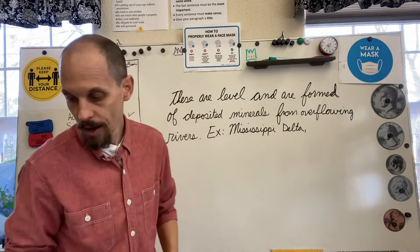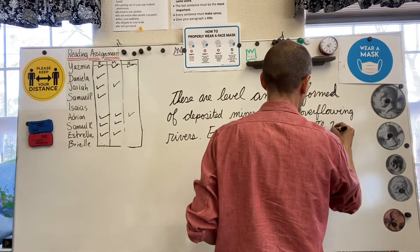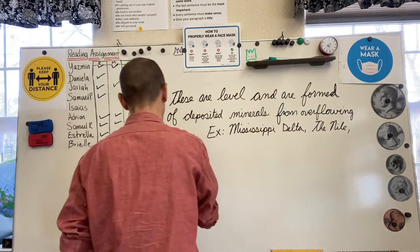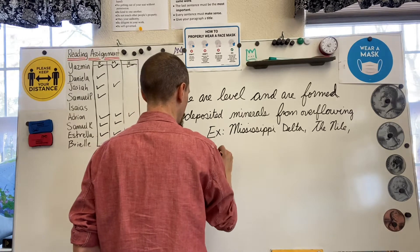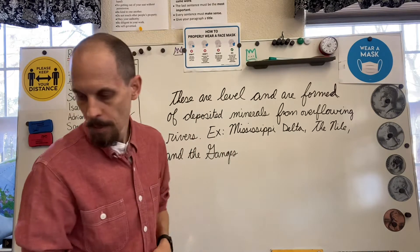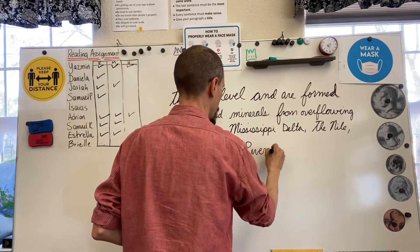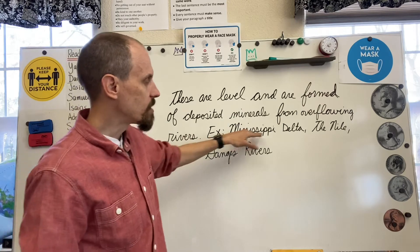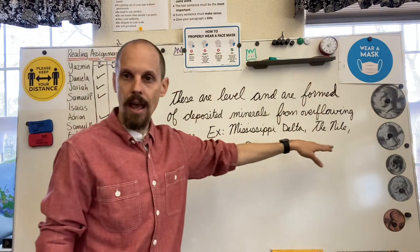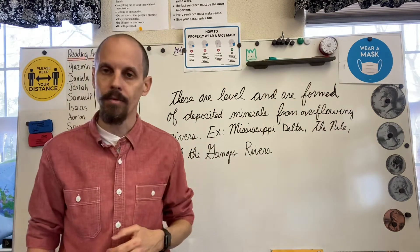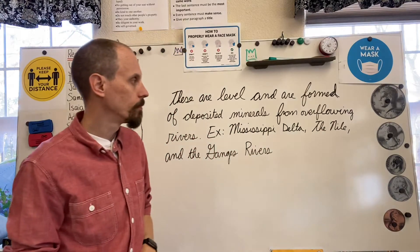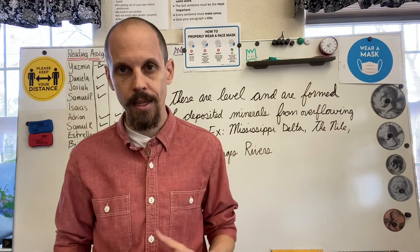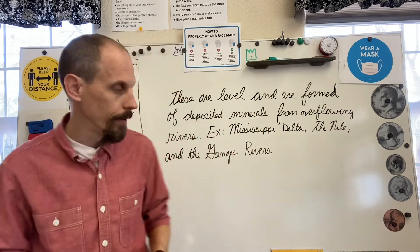Another example of an alluvial plain would be the area around the Nile River, and also near the Ganges River. The Mississippi Delta is in North America, the Nile area is in Africa, and the Ganges is in India — so that's Asia. Those are some examples of plains formed by overflowing rivers.